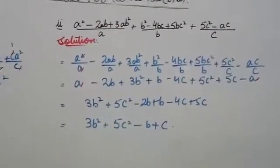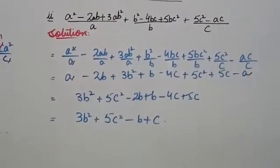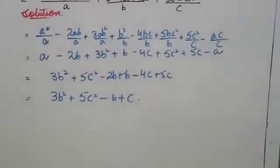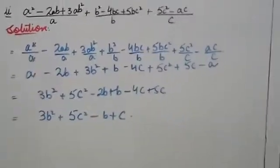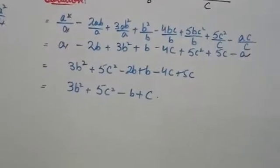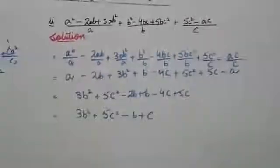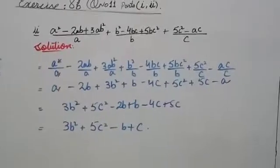The second part is: a² minus 2ab plus 3ab² by a, plus b² minus 4bc plus 5bc² by b, plus 5c² minus ac by c. Again there are three fractions, with algebraic expressions in the numerators divided by a, b, and c.